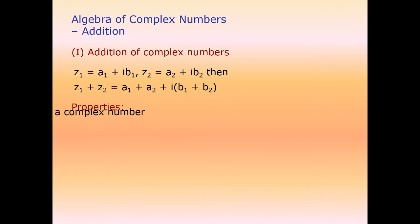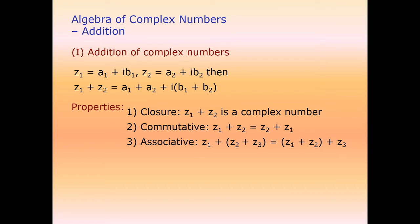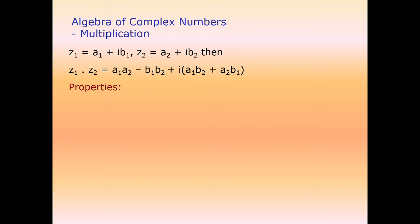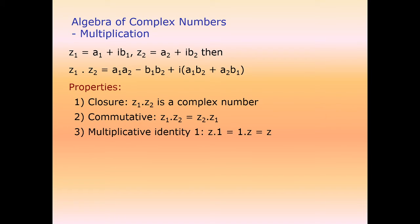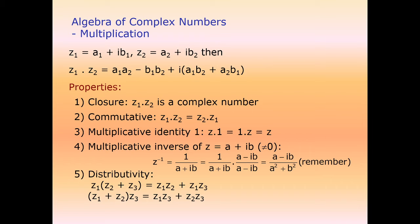Addition of complex numbers is done component-wise. The following properties hold: closure (sum of two complex numbers is a complex number), commutativity, associativity, additive identity (0), and additive inverse. The same applies for subtraction. For multiplication: commutativity holds, multiplicative identity is 1, and the multiplicative inverse of z is (a - iota·b) / (a² + b²).